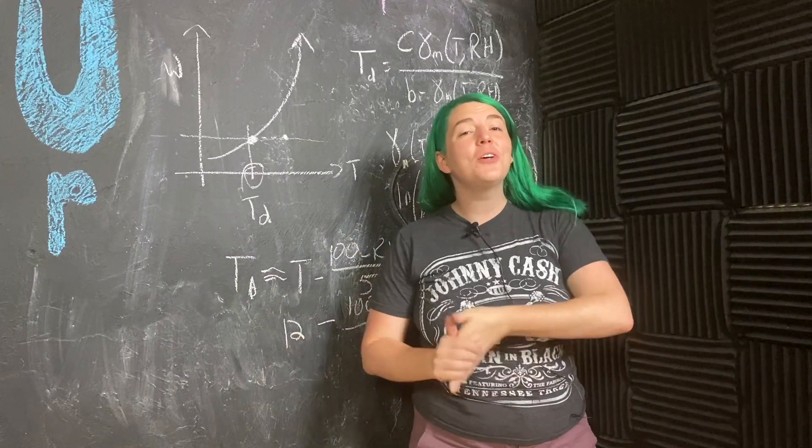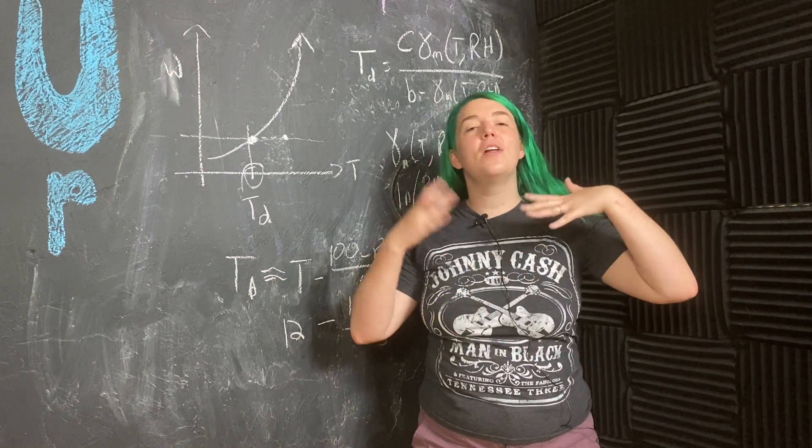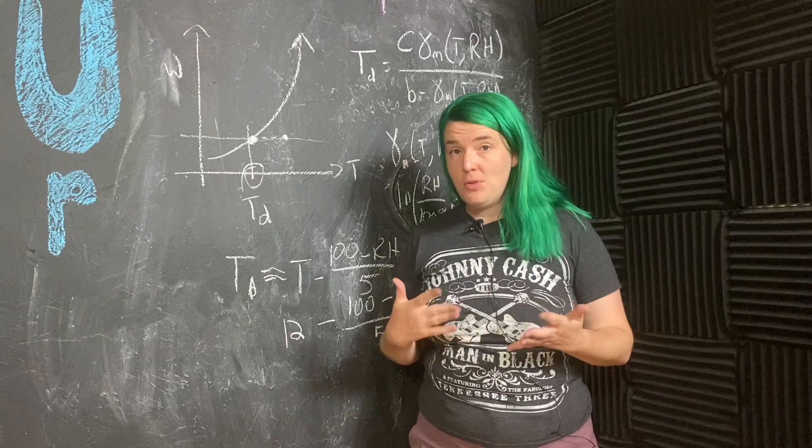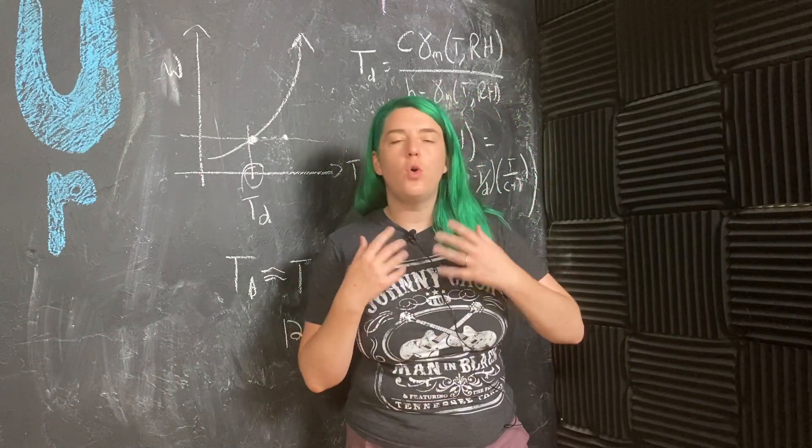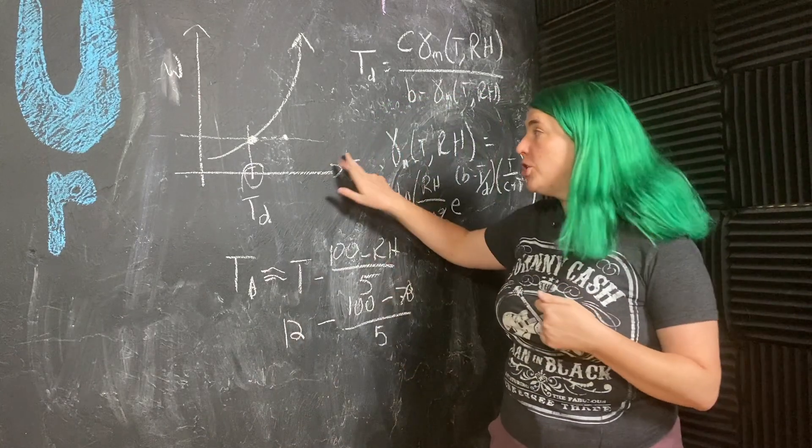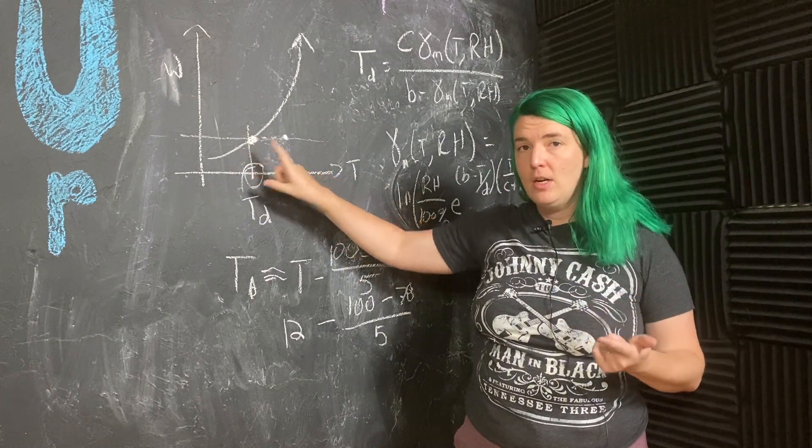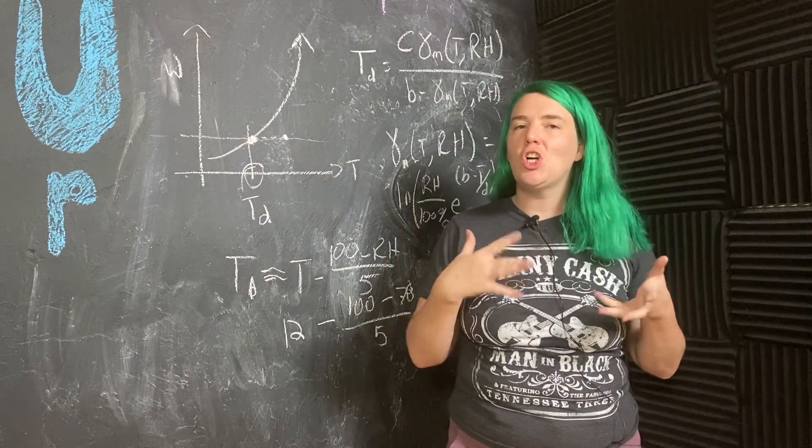All right guys, so your homework question was what are the conditions that you need for frost? So the first thing that you need is for over the course of the night temperature to drop to its dew point temperature because we need to develop that moisture on the ground.